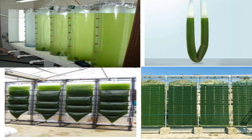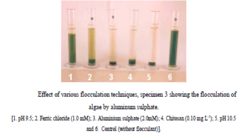Flocculation is another technique used to settle motile algal cells and separate them from the culture medium. Various flocculants are employed — such as aluminum sulfate, ferric chloride, and chitosan — where pH variations are made to bring the cells closer and aggregate them to form bigger flocs which settle down due to gravity.